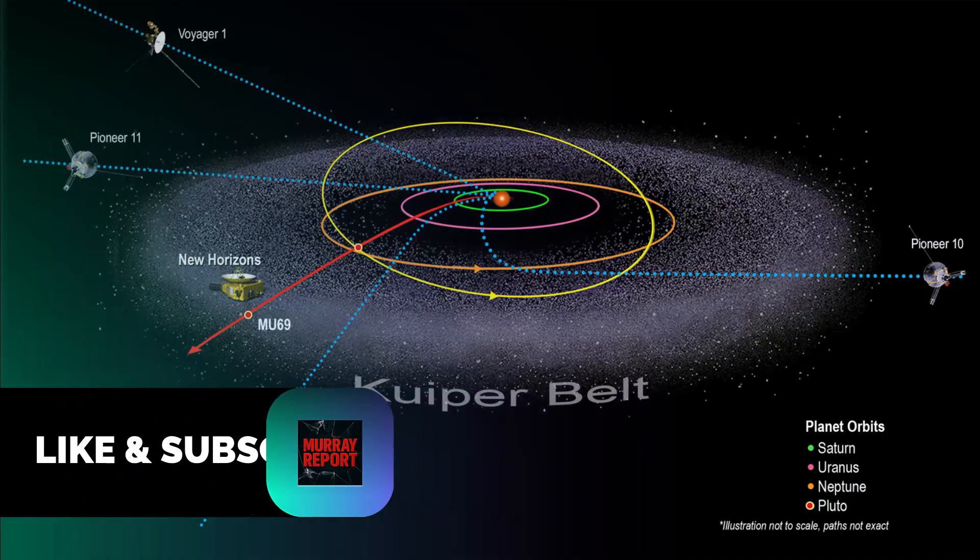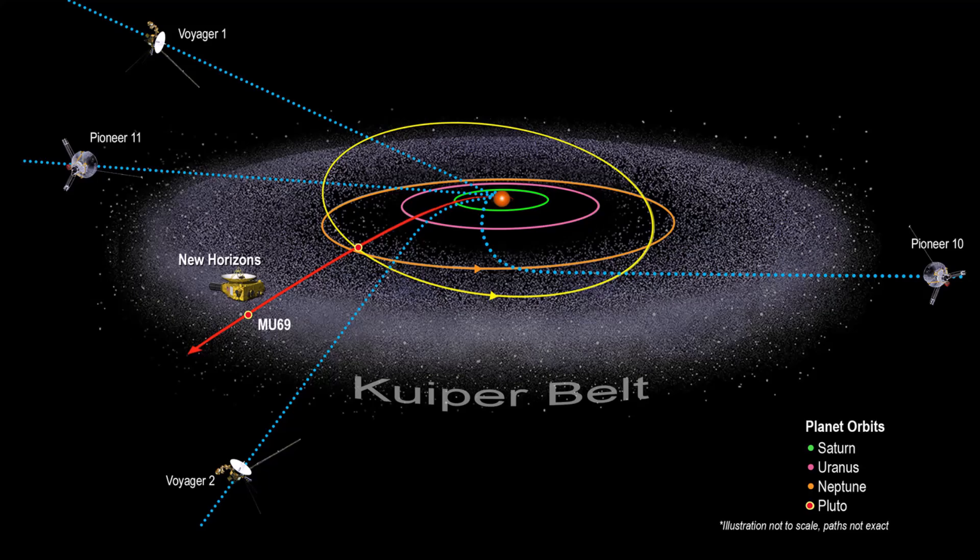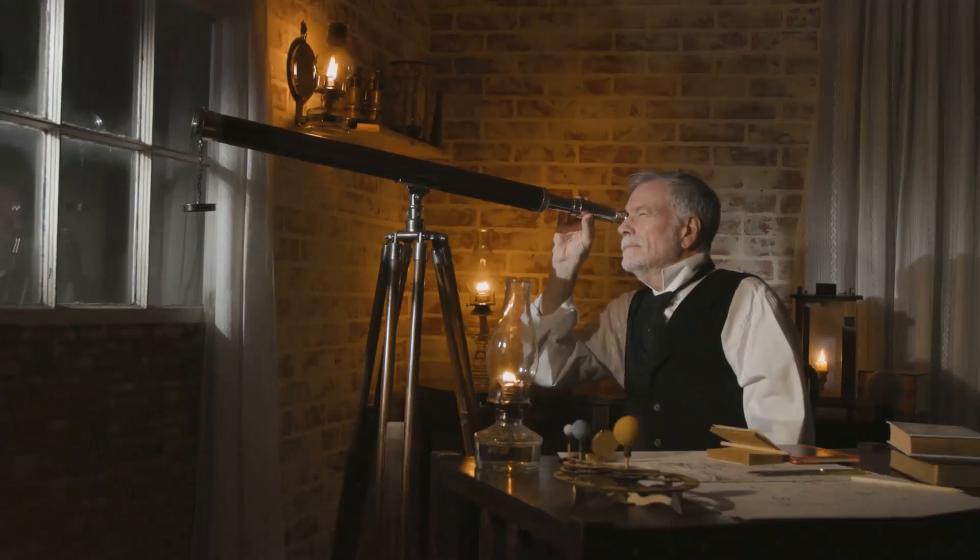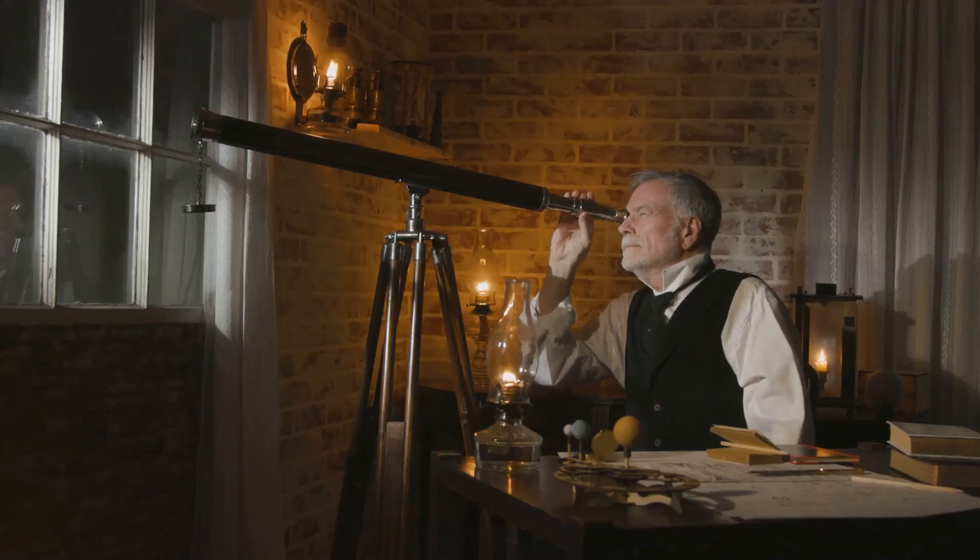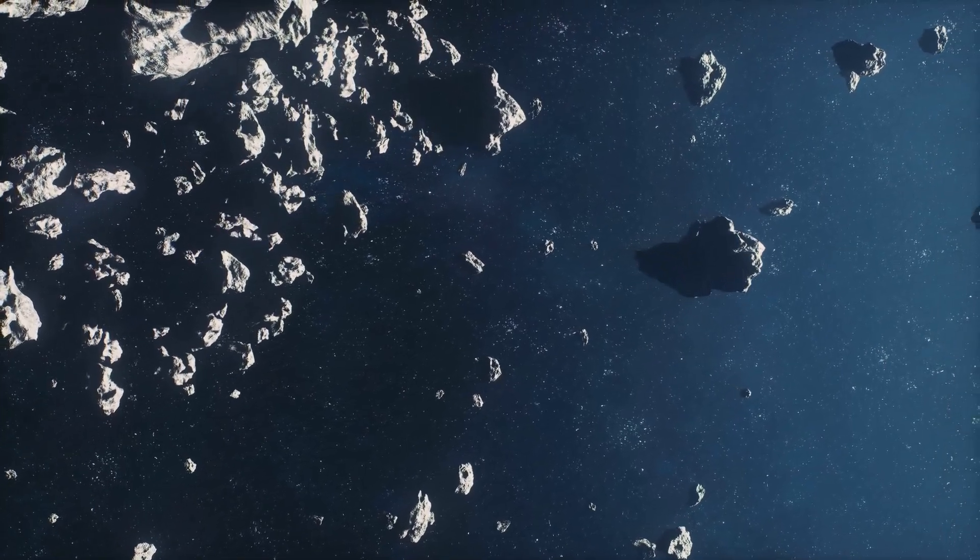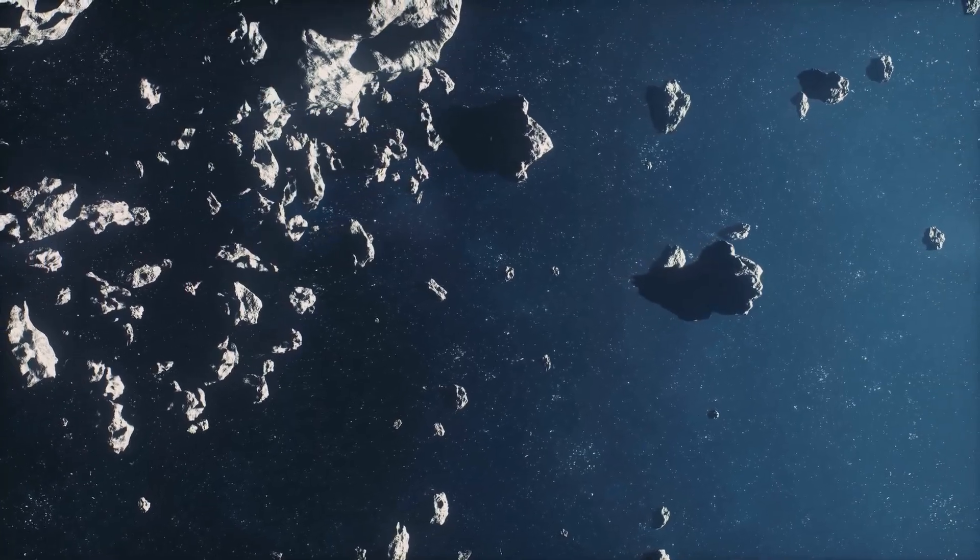Beyond the familiar realm of the eight confirmed planets lies a region of icy bodies known as the Kuiper Belt. This distant region, named after astronomer Gerard Kuiper, is home to countless icy objects, remnants from the early solar system.